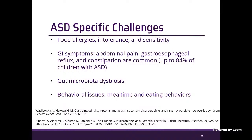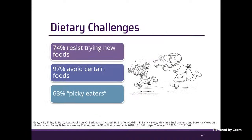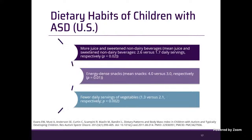There are obvious mealtime and eating behavior issues — children with ASD are known to be very selective and have problematic mealtime behaviors. Our research team conducted a preliminary study in Florida to examine mealtime behavior challenges among families with children with autism. Our study showed that 74 percent of our sample resist trying new food, almost all — 97 percent — avoid certain foods, and 63 percent of parents reported they consider their children to be picky eaters.